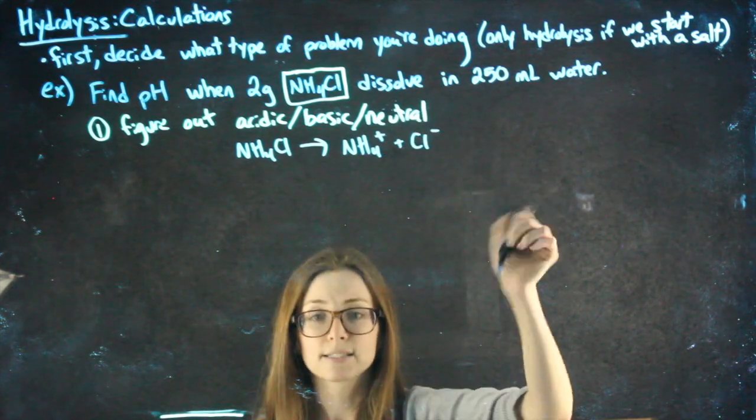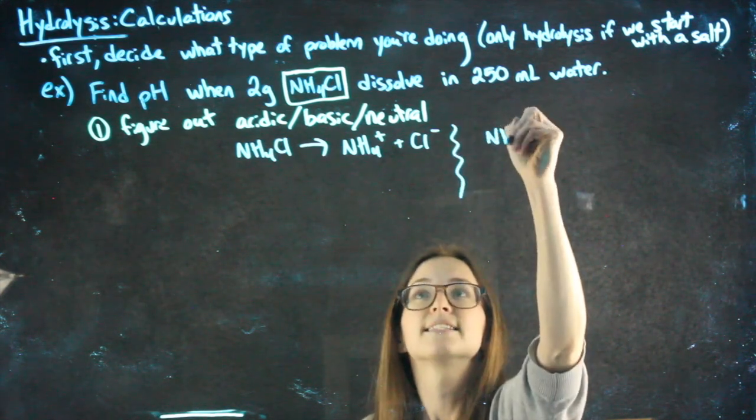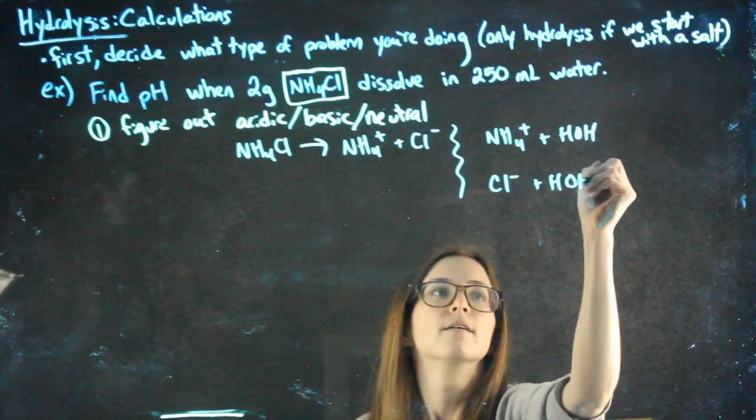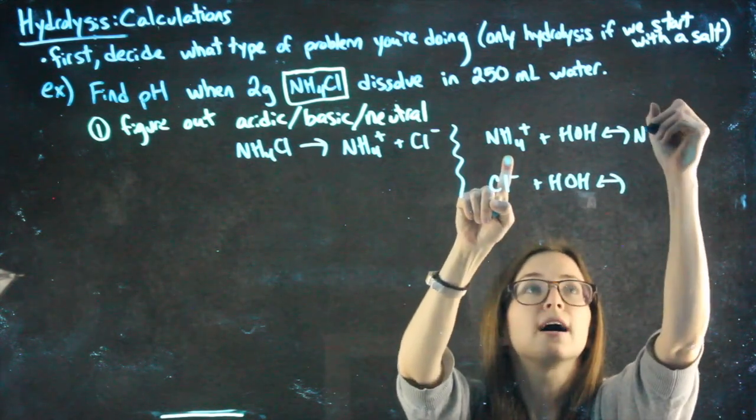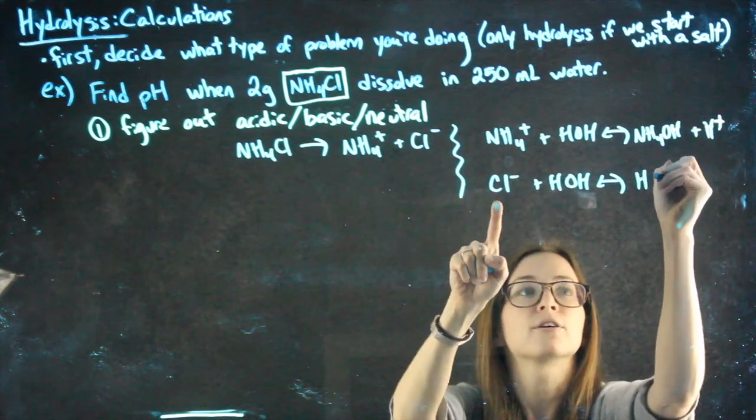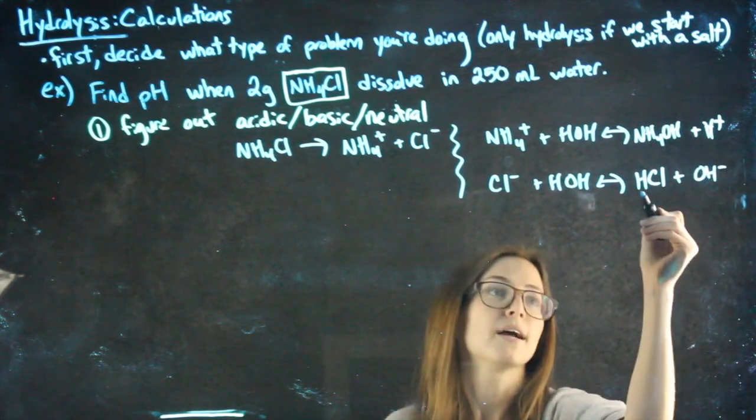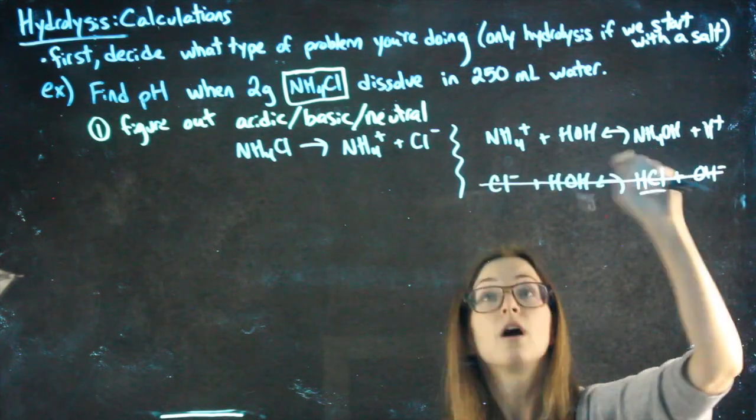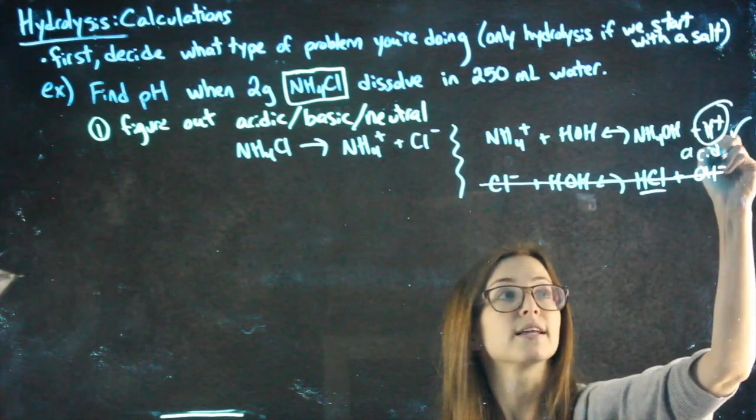NH4+ plus Cl-, then I take these ions, and I test them against water. The positive ion is going to grab the hydroxide and release the H+, the negative ion is going to grab the H+ and release the hydroxide. Because this is a strong acid, this reaction doesn't happen. That is not strong, so this reaction does happen, releasing H+, and so we're dealing with something acidic.